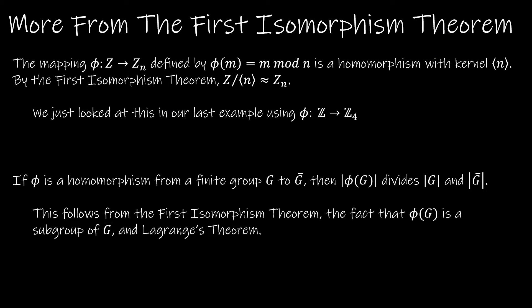What we just went through used the theorem that the mapping phi from Z to Zₙ defined by phi(m) = m mod n is a homomorphism with kernel equal to the cyclic subgroup ⟨n⟩. Then by the first isomorphism theorem, Z mod ⟨n⟩ is isomorphic to Zₙ. In our example, phi mapped Z to Z₄, and we showed that Z mod ⟨4⟩ is isomorphic to Z₄.